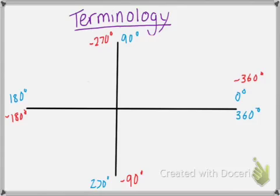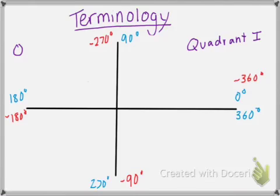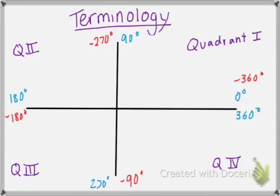Let's talk about how to describe where an angle falls. In this first box up here we call this quadrant 1, and we use Roman numerals. Our next box we call quadrant 2. Our next box we would call quadrant 3, so III. And our last one is quadrant 4, written as IV — since V is 5, it's like saying 1 before 5.